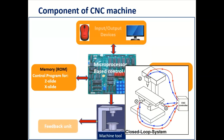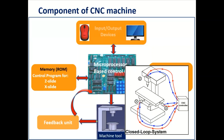The feedback unit takes input from the machine tool and transfers it to the control unit — the machine control unit — for the necessary corrections. If anything goes wrong in the program, we can edit the programs, and through the input/output device, the microprocessor makes the changes. After corrections, the process will run again, the control unit will give movement to the various drives, and the job will be performed. This is a closed-loop system because whatever is wrong in the program can get corrected through the feedback unit. Thank you.